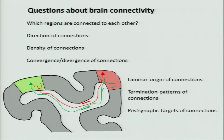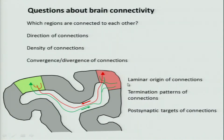When you sit back and think about what is the important question about brain connectivity, the first thing that comes to mind is which regions are connected to each other. But you also quickly come to the point where you want to know the direction of these connections, how dense they are, and what is the convergence and divergence of this connectivity. Sooner or later you also need to know what goes on in the gray matter — the laminar origin of connections, the termination pattern, and even the post-synaptic target.